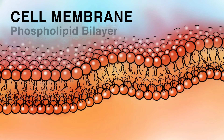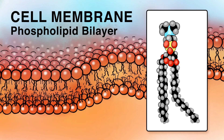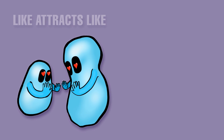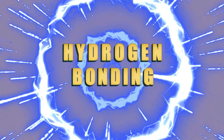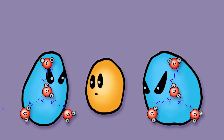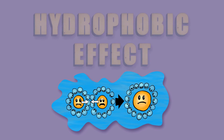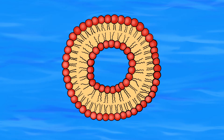Cellular membranes are made up of a phospholipid bilayer, which consists of two leaflets of phospholipids. These phospholipids have polar heads which are hydrophilic, or water-loving, and nonpolar fatty acyl tails that are hydrophobic, or water-hating. Polar substances like to interact with other polar substances, and nonpolar substances hang out with other nonpolar substances. Water molecules want to interact so badly with their polar buddies that anything nonpolar getting in the way of their hydrogen bonding results in decreased entropy. The result is what's called the hydrophobic effect.